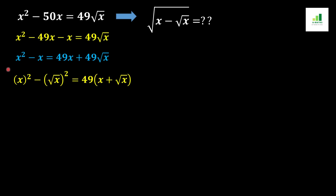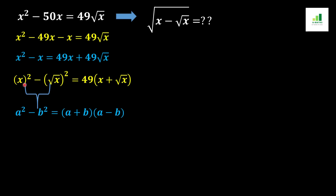We rewrite x² as (√x)² and x as (√x)² — wait, as x overall squared and √x overall squared — to apply the a² - b² formula. Since a² - b² = (a + b)(a - b), with a = x and b = √x, the left side factors as (x + √x)(x - √x). The right side remains 49(x + √x).